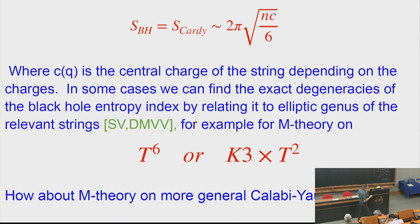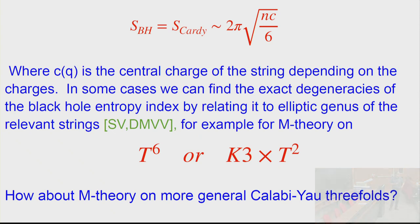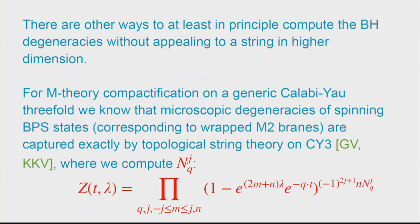The next question is: does this work for an arbitrary Calabi-Yau threefold? Is there a similar story if you replace T6 or K3 cross T2 with an arbitrary Calabi-Yau threefold? For Calabi-Yau threefolds more generally, there are other ways to at least in principle compute black hole entropy without appealing to a string.